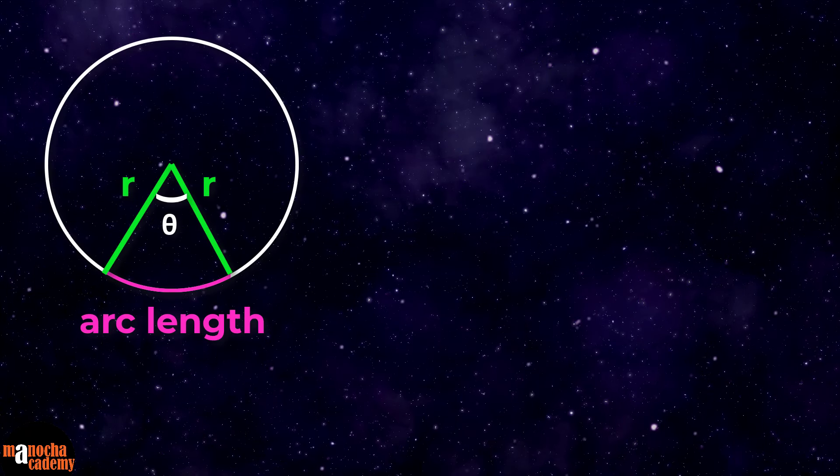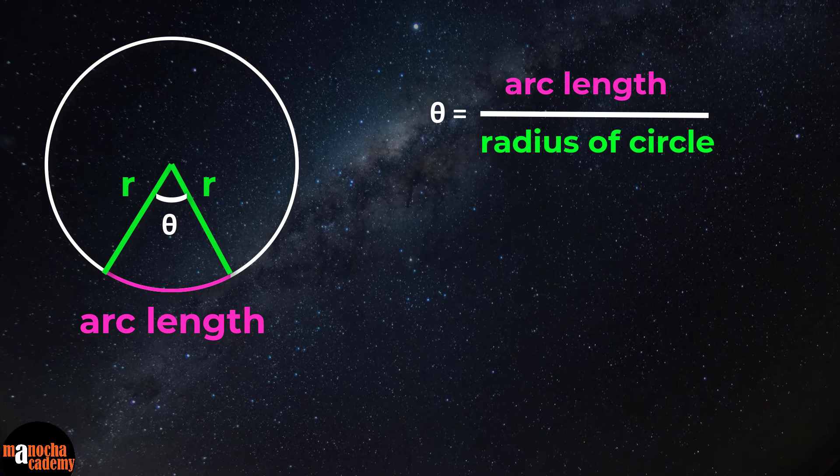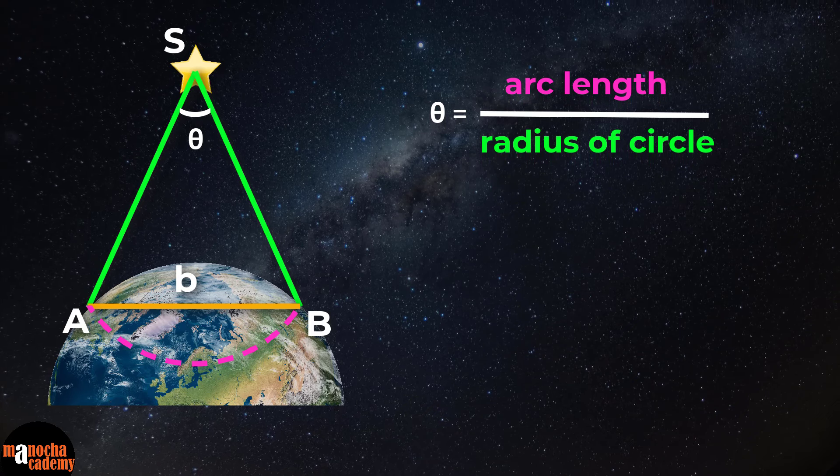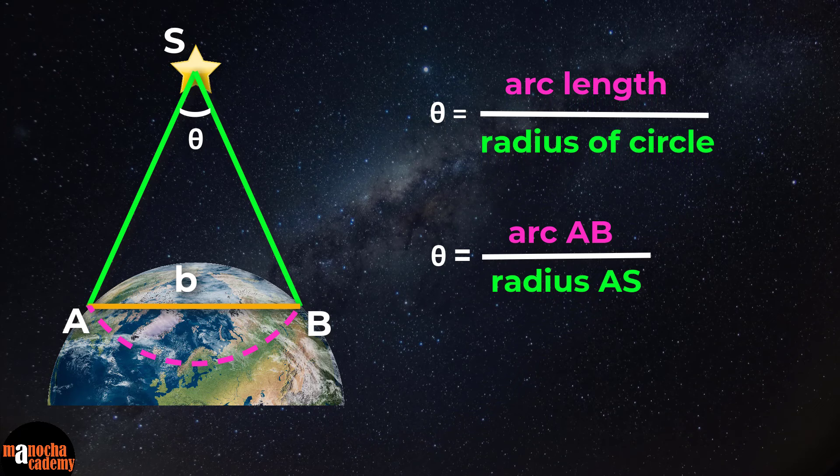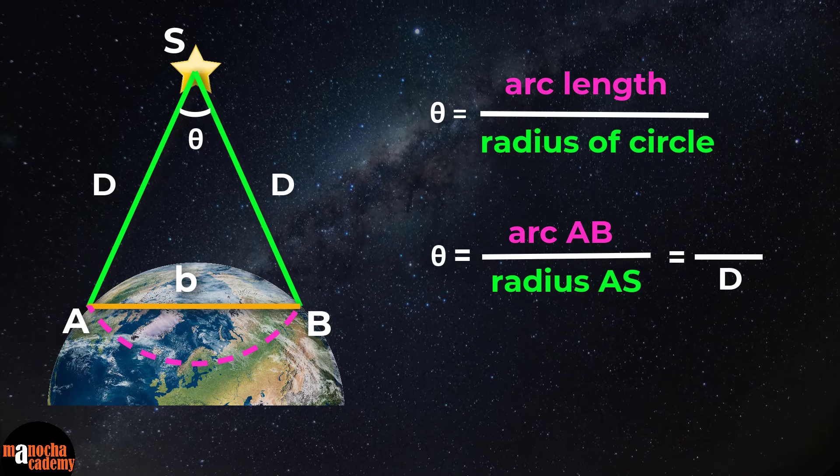Remember how angle is measured in radians. The angle theta in radians is the arc length divided by the radius of the circle. So if you consider the star S to be center of the circle, angle theta in radians is going to be the arc length of AB divided by the radius AS, which we'll denote by capital D.